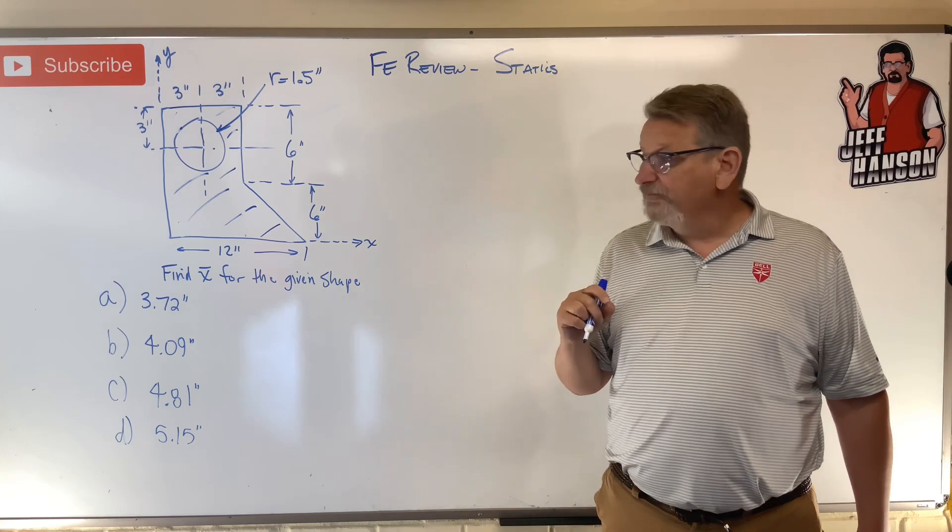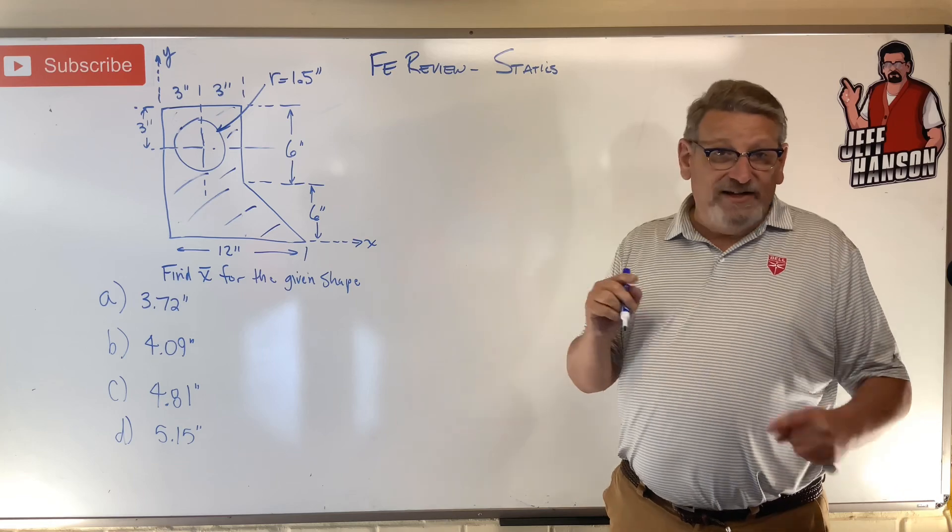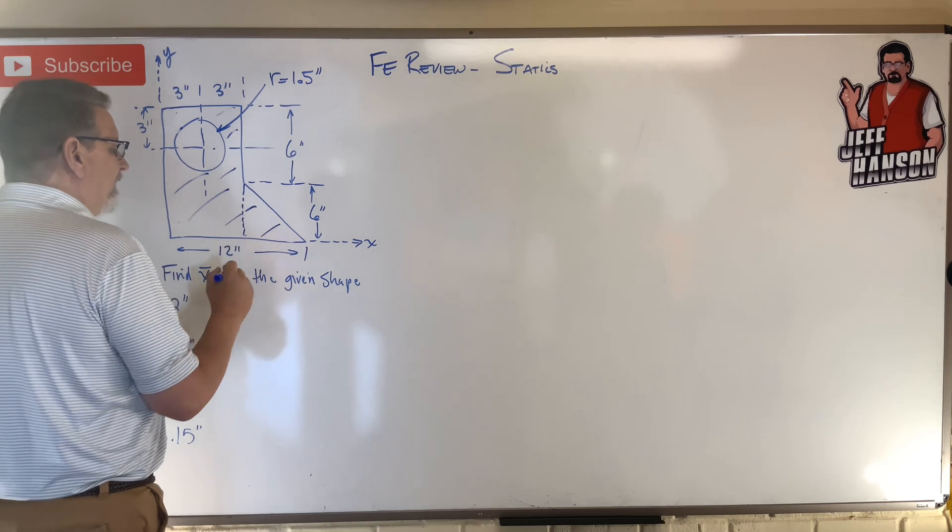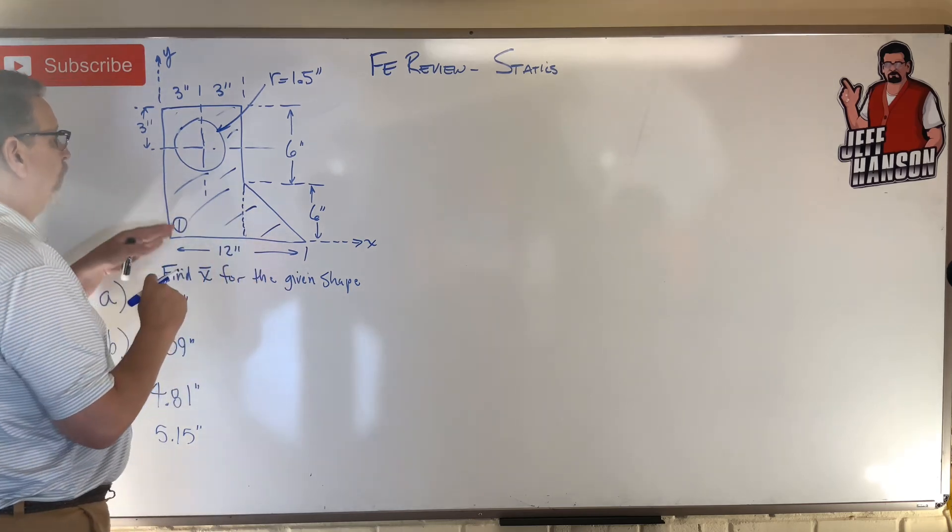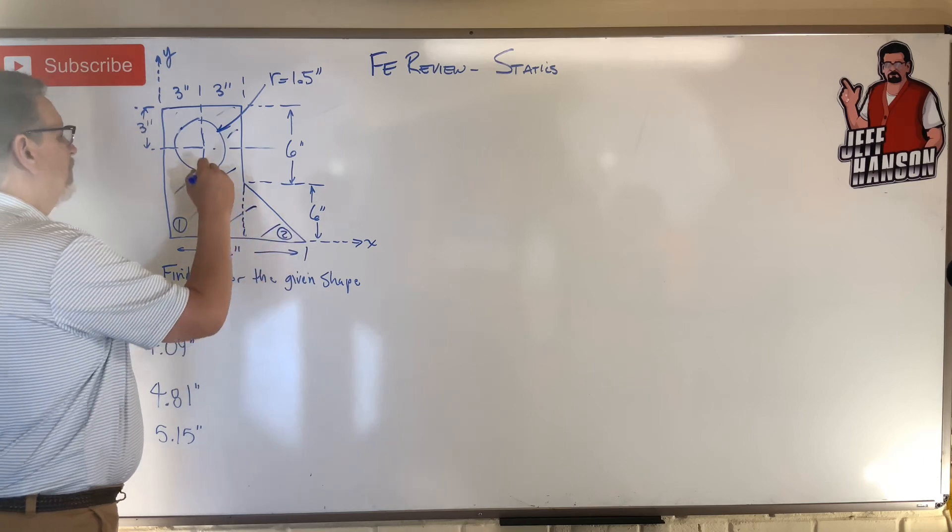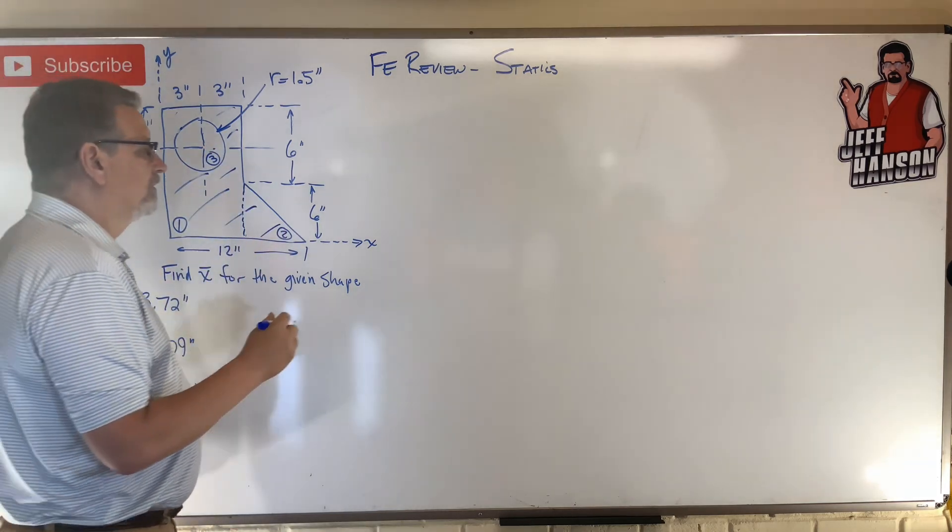Okay, did you get it? Let's go. So if I'm going to do this, I think what I do is I divide it right here. I'm going to call this shape one, this big rectangle, shape two, the triangle, and shape three will be my cycle.